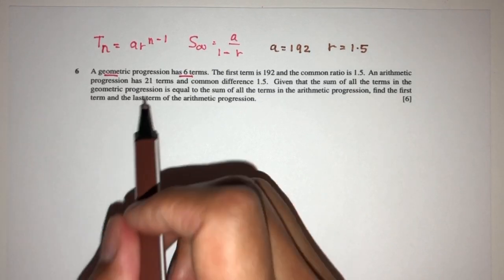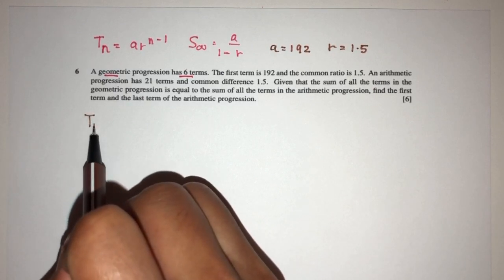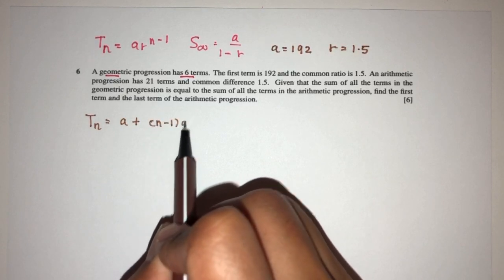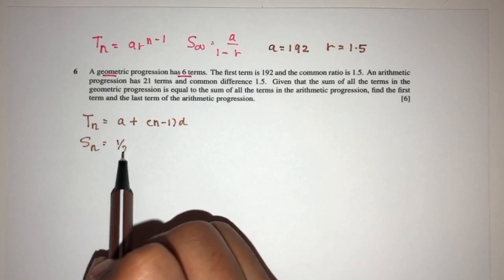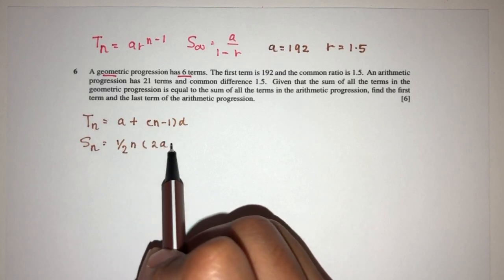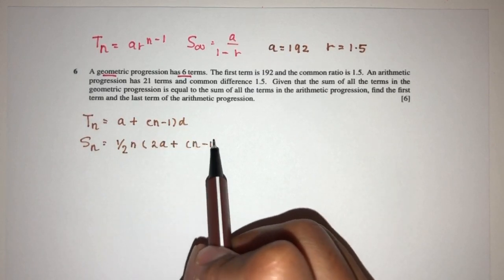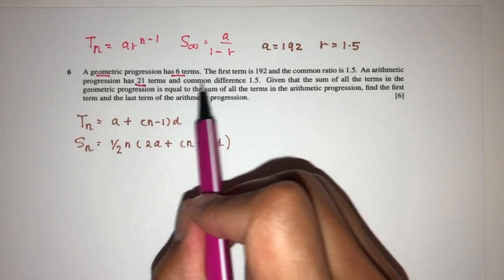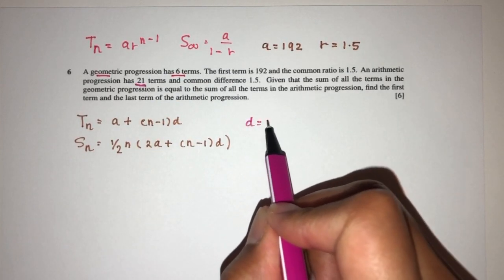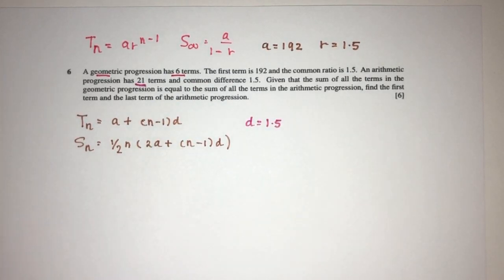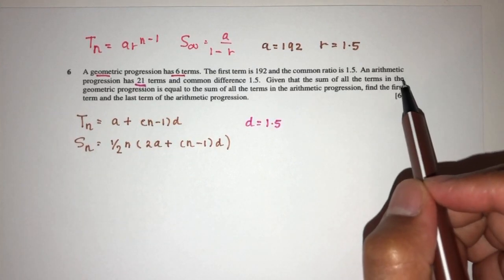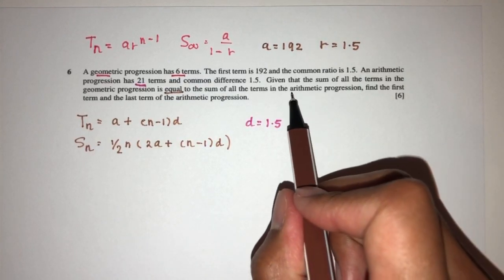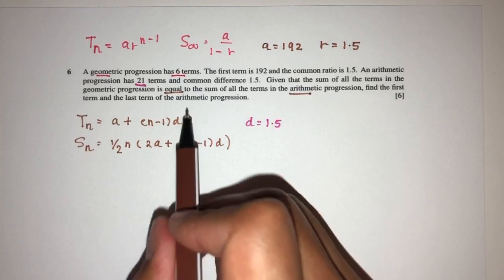An arithmetic progression has 21 terms. We know for AP, the nth term is given by a plus n minus 1 times d. The sum of the first n terms is half n times 2a plus n minus 1 times d. We have 21 terms, and the common difference d is 1.5. Given the sum of the terms in the geometric progression is equal to the sum of all the terms in the arithmetic progression, find the first and last term of the arithmetic progression.